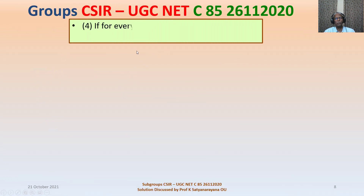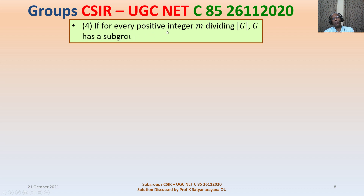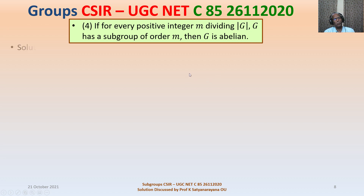Statement 4: if for every positive integer M dividing the order of G, G has a subgroup of order M, then G is abelian. This is not necessarily true.